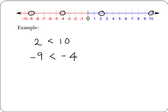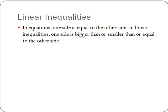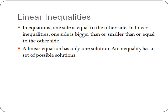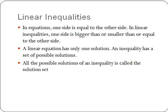Now that we have looked at some basic inequalities, let's look at what linear inequalities are. In equations, one side is equal to the other. In linear inequalities, one side is bigger than, smaller than, or equal to the other side. A linear equation has only one solution, whereas an inequality has a set of possible solutions. All the possible solutions of an inequality is called the solution set.